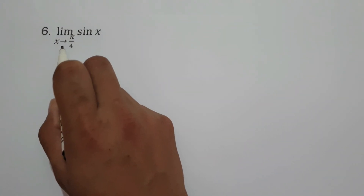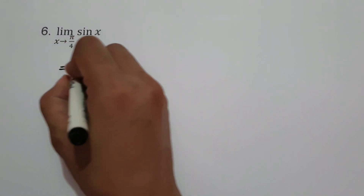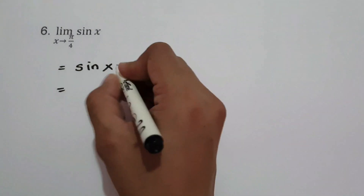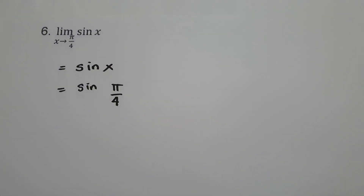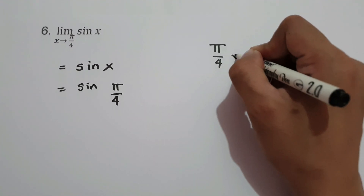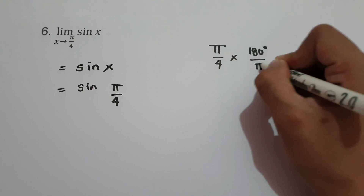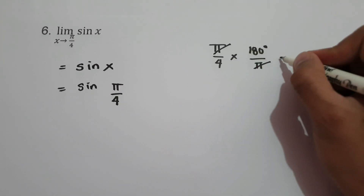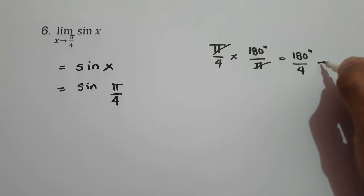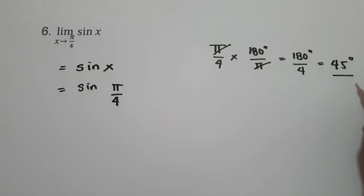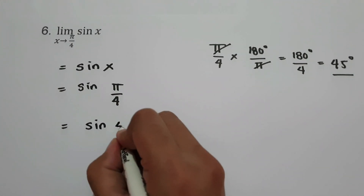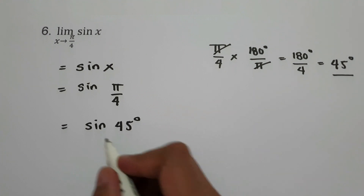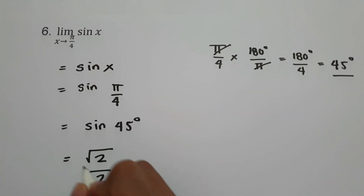On example number 6, we have the limit of sin(x) as x approaches π/4. Substituting x = π/4, we need sin(π/4). Converting π/4 to degrees: π/4 times 180°/π equals 45°. And sin(45°) is square root of 2 over 2. This will be our answer.